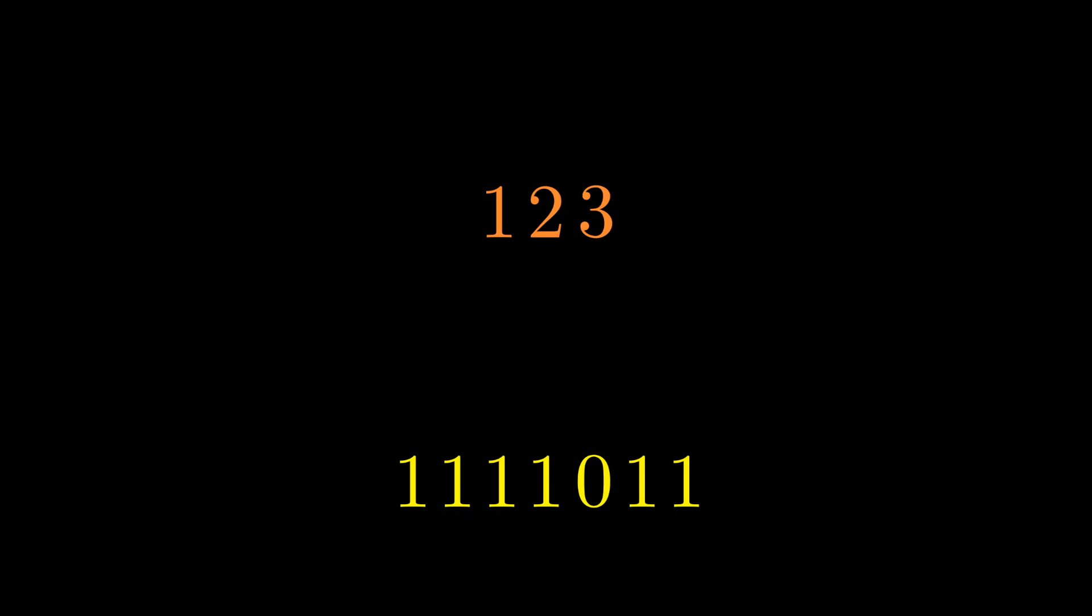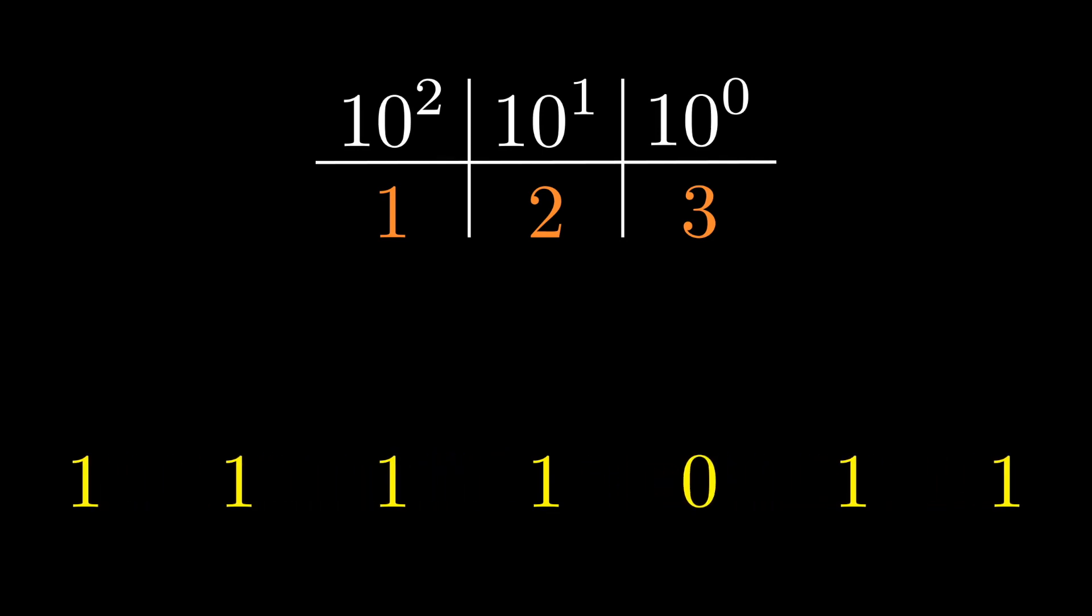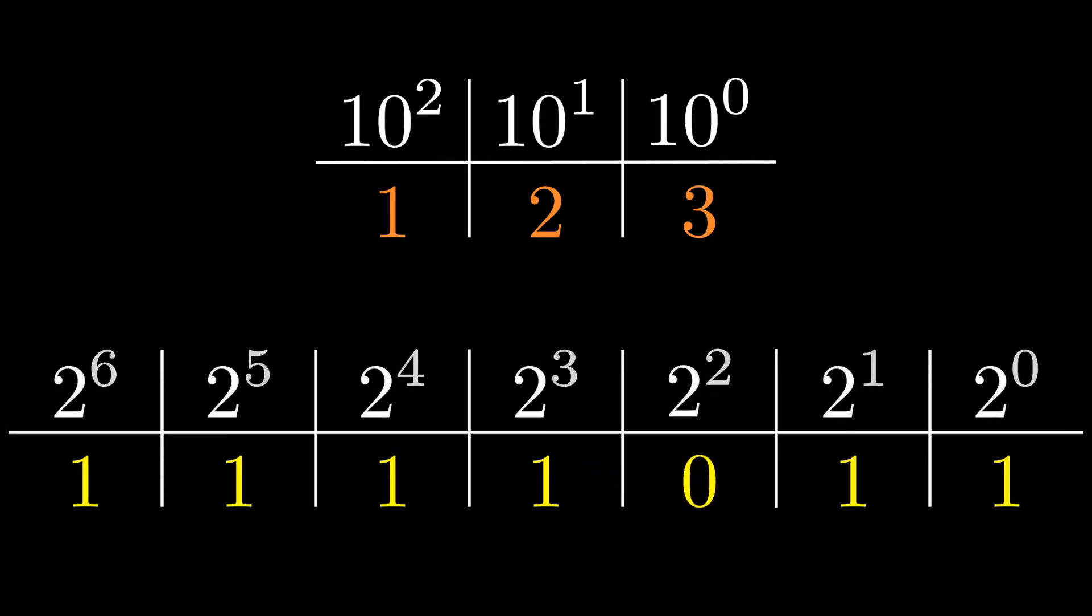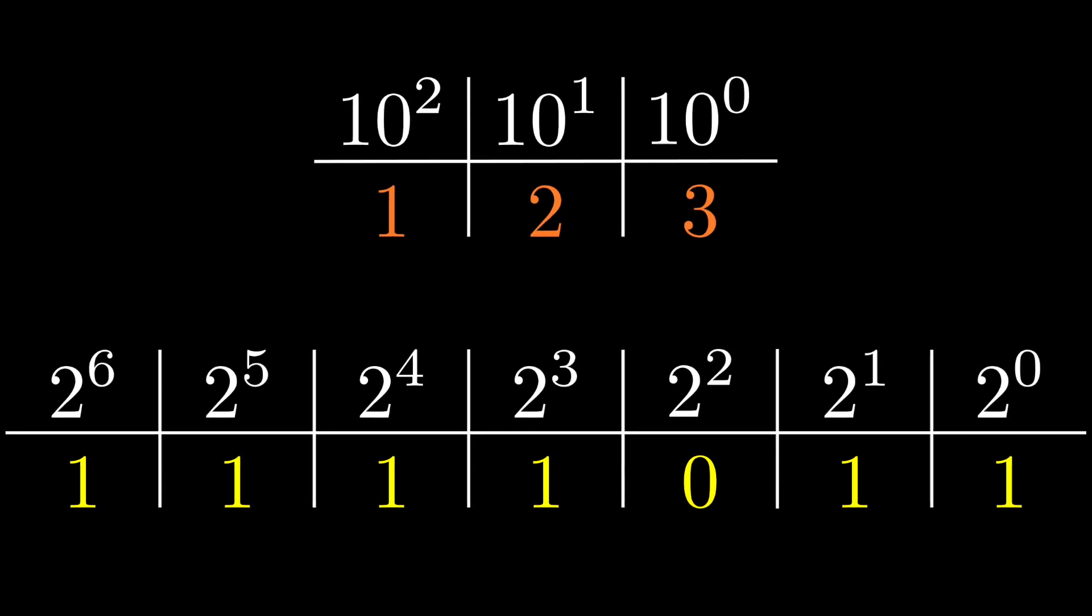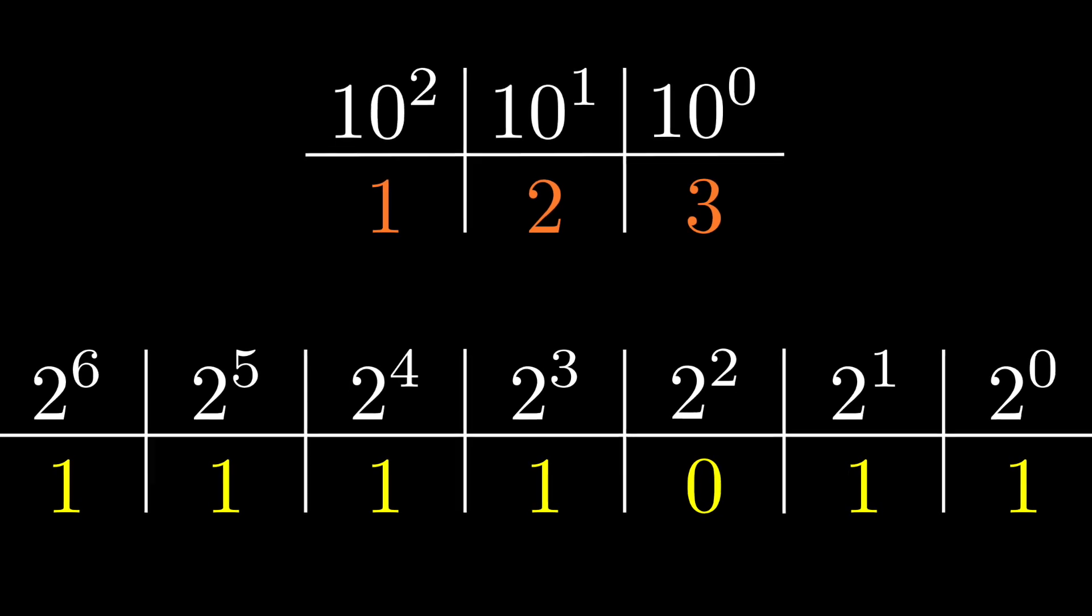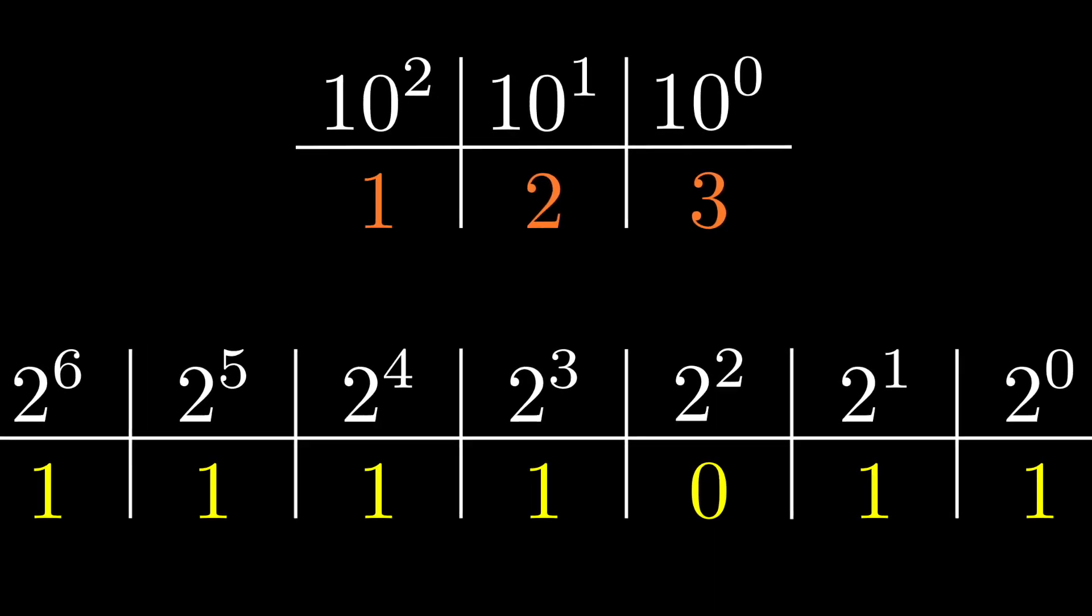So essentially the difference between base 10 number system and binary is that in base 10 digits occupy places represented by powers of 10, so you'd have a ones place, tens place, a hundreds place and so on, whereas in binary you'd have a ones place, a twos place, a fours place and eighths place and so on by powers of 2 instead of powers of 10.